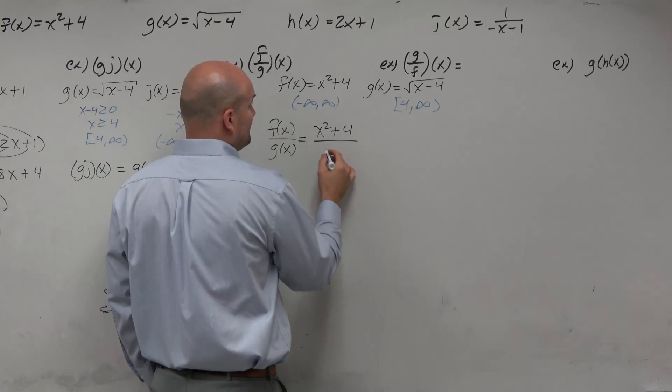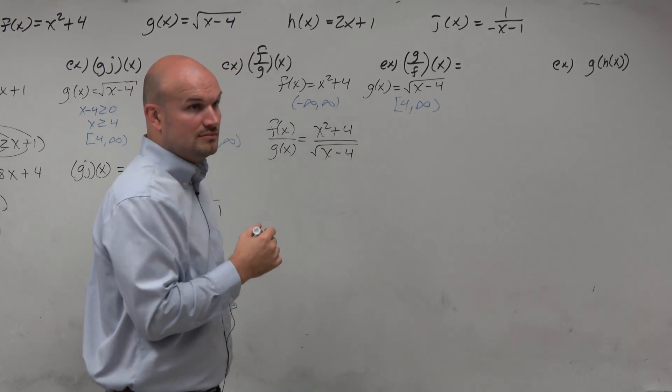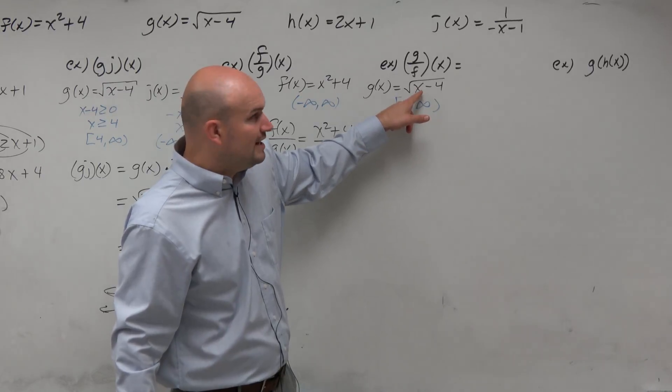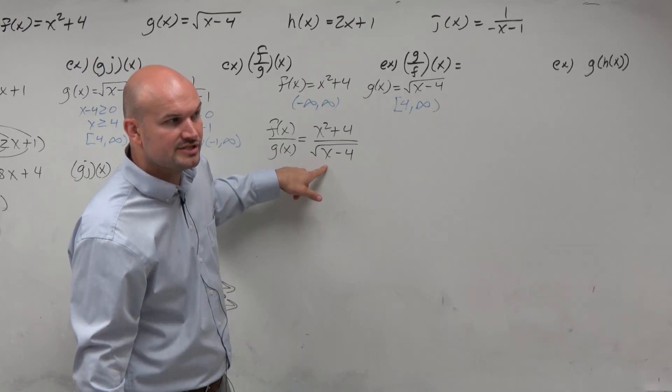because what happens when x is equal to 4? It's 0, right? It can be 4 here, just with square root of x minus 4. But now it can't be 4, because that makes the denominator equal to 0.